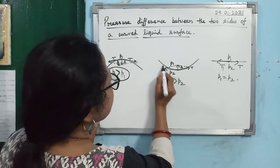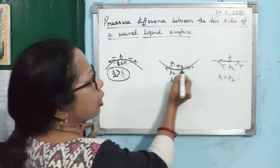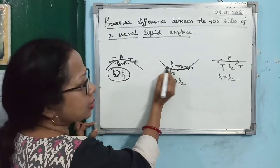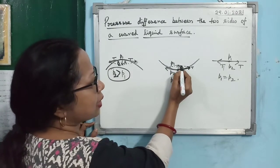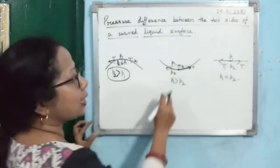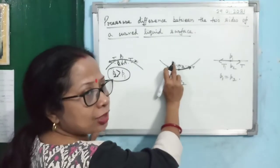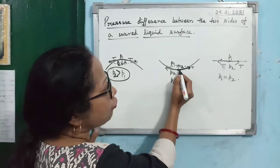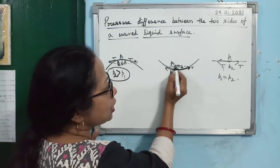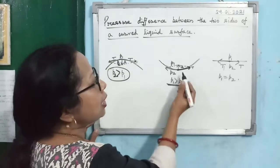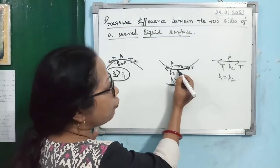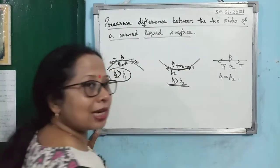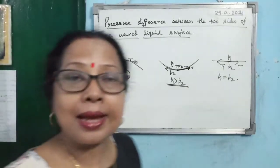Now consider water-glass, which gives a concave meniscus. If you take a point on it, surface tension T is acting along the two sides. Taking the resultant, you see it acts in the upward direction. In this case, if P1 is the pressure above the surface and P2 below, since the resultant force is upward, P1 is greater than P2. Due to this pressure difference, a force acts in the downward direction which balances the resultant force and the meniscus maintains its shape.